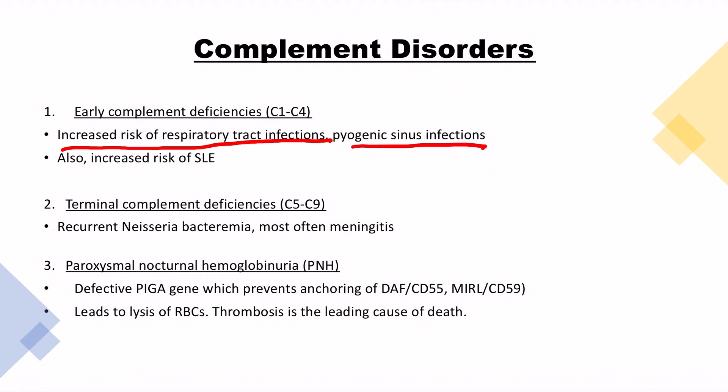Second is the terminal complement which consists of C5 to C9 deficiency. If you have C5 to C9 deficiency, that will lead to recurrent Neisseria bacteremia, most often meningitis. In a nutshell, early complement deficiency is respiratory tract infection and sinus infection. Terminal complement deficiencies cause recurrent Neisseria bacteremia.